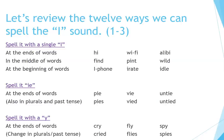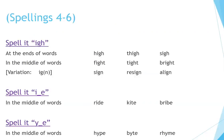Spell it with a Y at the ends of words: cry, fly, spy. Changes in plurals and past tense: cried, flies, spies. Spellings four to six. Spell it I-G-H at the ends of words: high, thigh, sigh; in the middle of words: fight, tight, bright. Variation I-G-N: sign. Result: design, align. Spell it I-silent-E in the middle of words: ride, kite, bribe. Spell it Y-silent-E in the middle of words: hype, bite, rhyme.